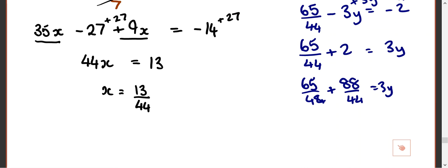What's 65 plus 88? 153. 153 over 44 equals 3y.